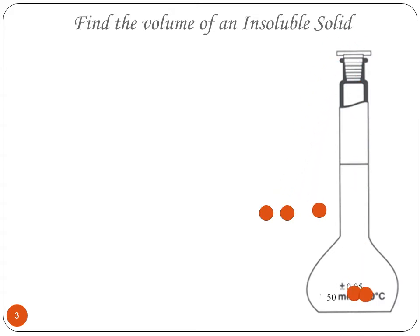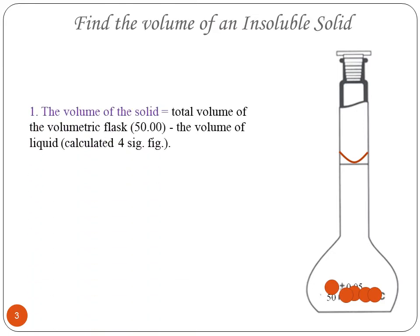If we add an unknown solid and a liquid of known density into the volumetric flask to the mark, volume of the liquid plus volume of solid equal to 50.00 ml.